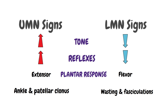An easy way to remember the upper and lower motor neuron symptoms: upper is going up or increasing. So in upper motor neuron symptoms, everything will increase — your reflexes will increase, tone will increase, your muscles will become more rigid and spastic, and your plantars will be up-going. Whereas lower means decreasing, so everything including your tone and reflexes will decrease and your muscles will become wasted.